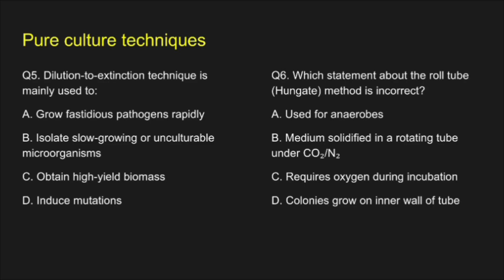Question 5. Dilution to extinction technique is mainly used to — A. Grow fastidious pathogens rapidly, B. Isolate slow growing or unculturable microorganisms, C. Obtain high yield biomass, D. Induce mutation. The correct answer is option B: Isolate slow growing or unculturable microorganisms.